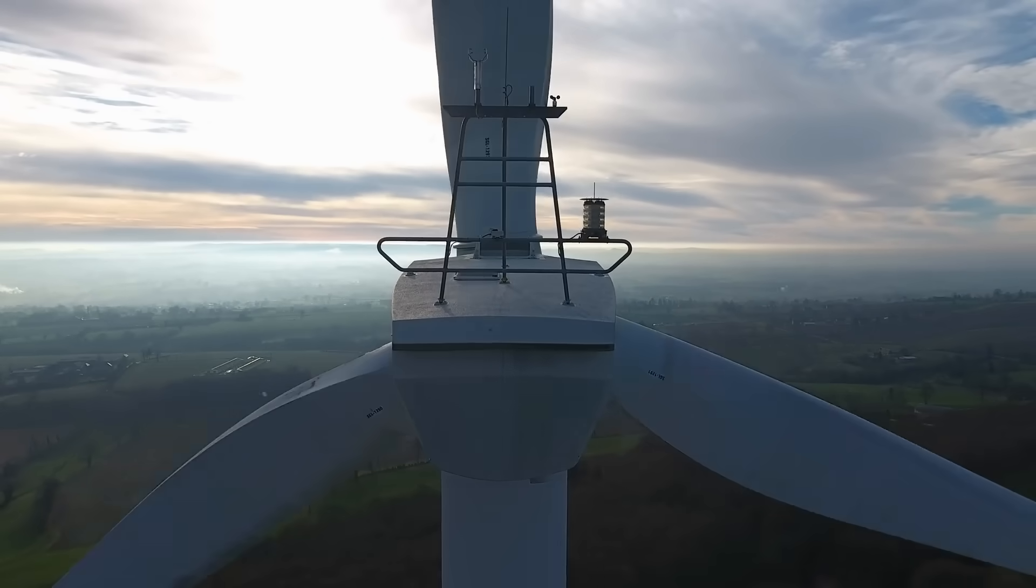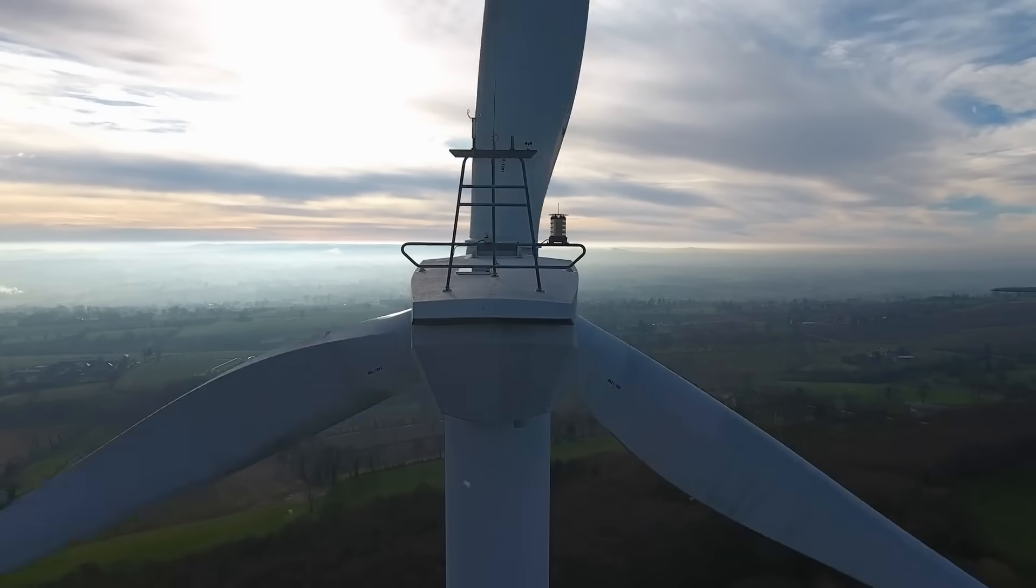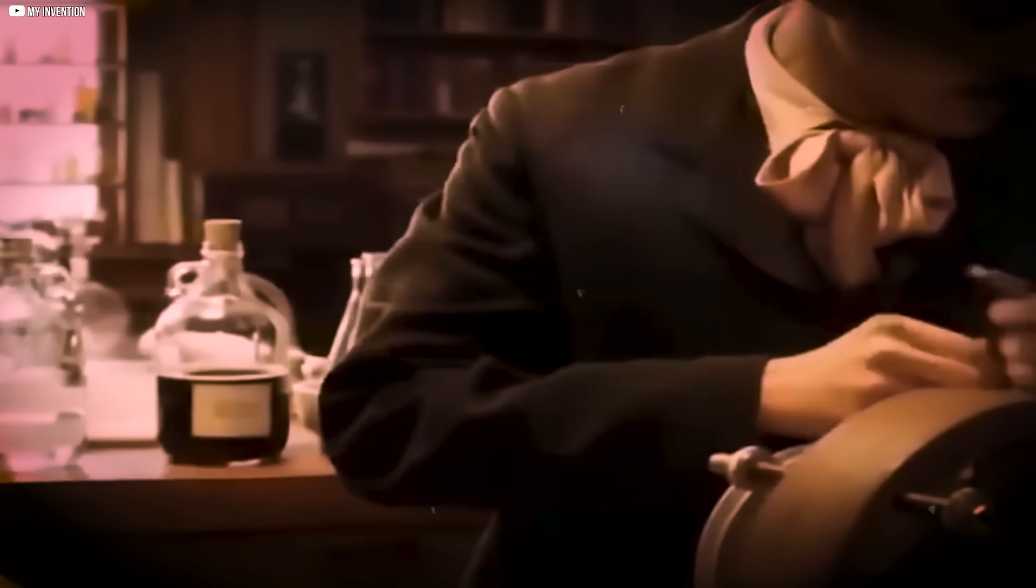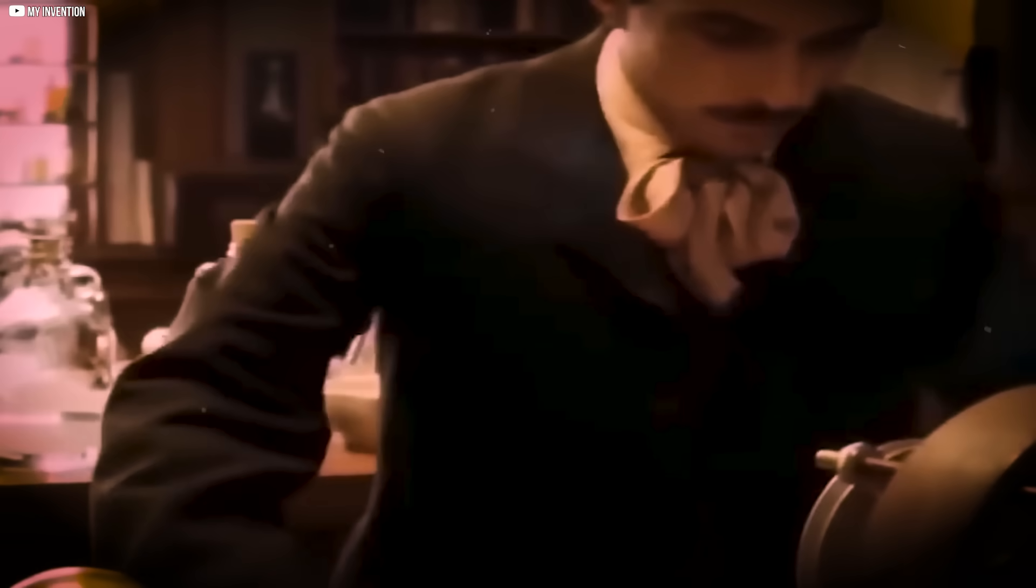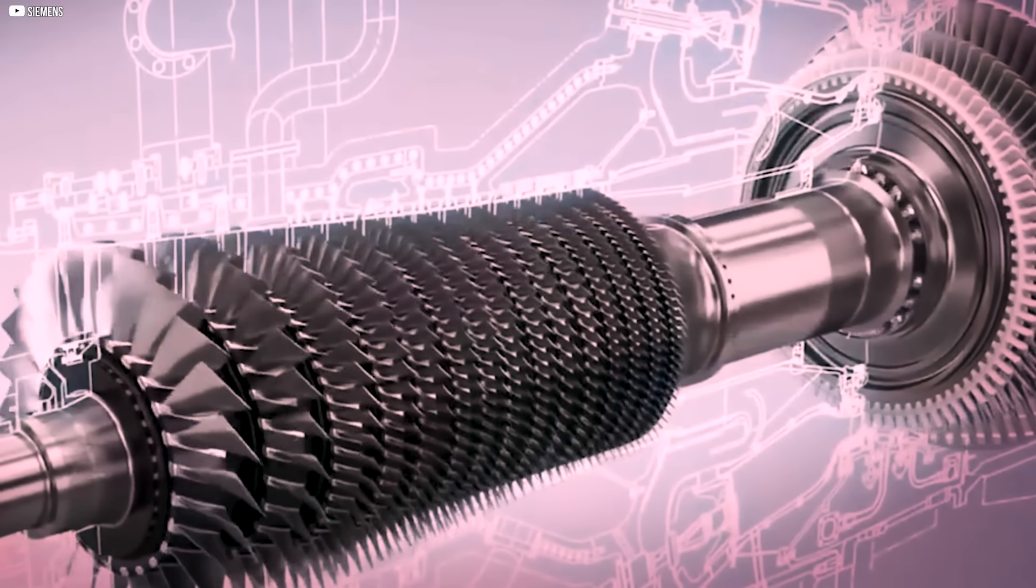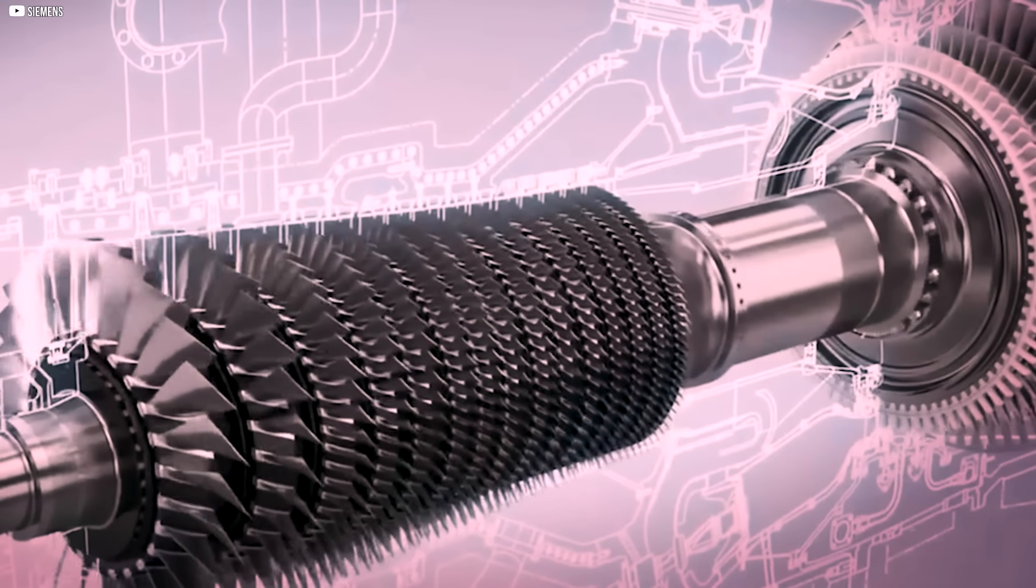Unlike other turbines that sliced through steam like knives, his would embrace it. No blades, just thin discs. The fluid wouldn't strike. It would cling, wrap around and slide along the surface. The key wasn't impact, it was friction. Or more precisely, viscosity.